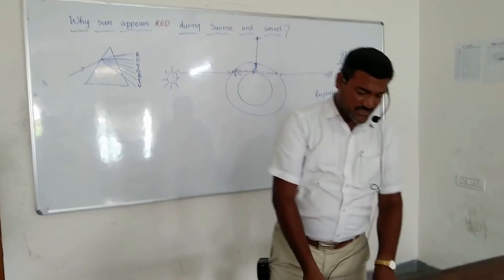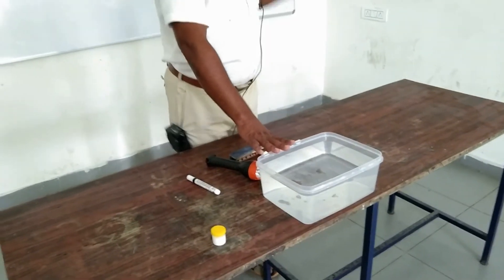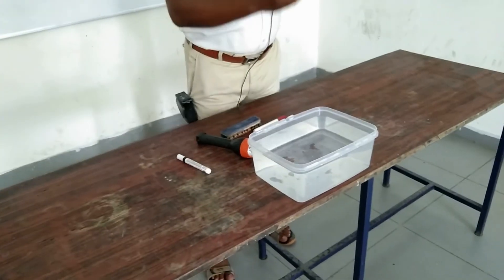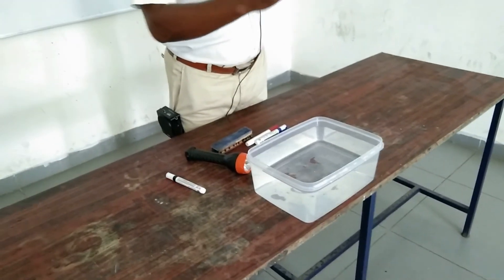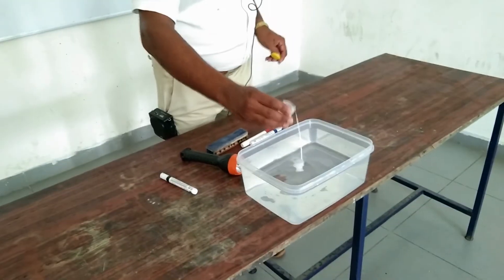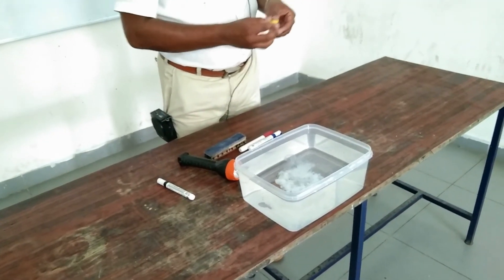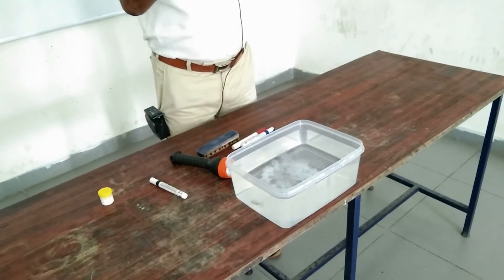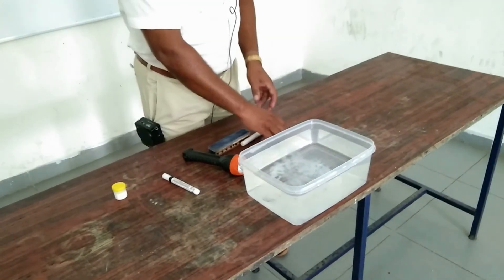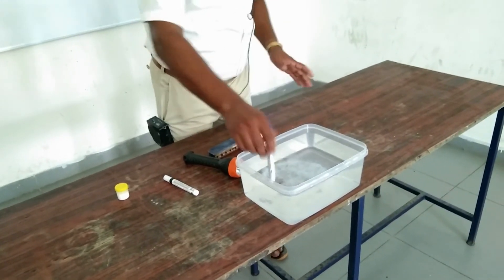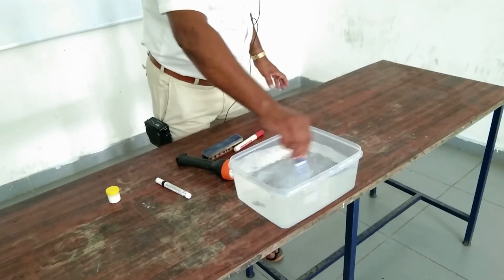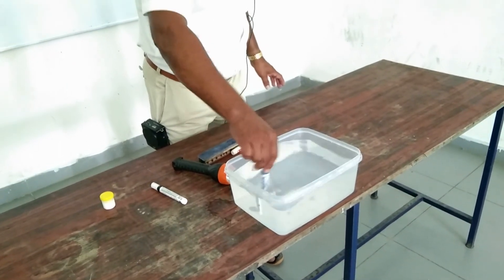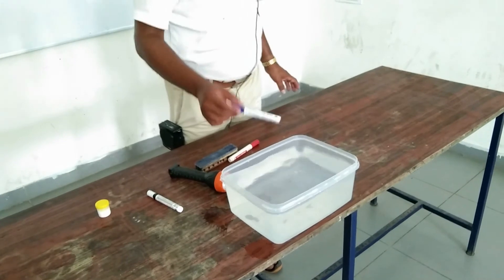Let us demonstrate this. Imagine this is water. A colloid will be created by adding a little milk to this water. The milk particles will suspend and float in the water, creating a colloidal solution. This colloid simulates the atmosphere for our demonstration.